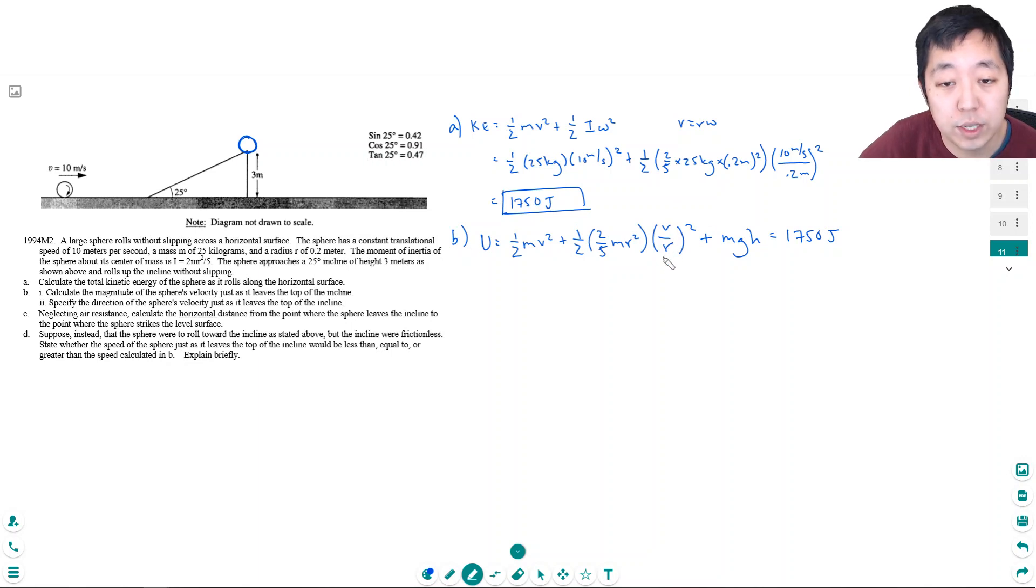Now this r squared is going to cancel with this r squared. So this is one half mv squared plus one fifth mv squared. What's one half plus one fifth? That's seven tenths. So if I combine these two, I get seven tenths mv squared plus mgh is equal to 1750. And so I can solve for v squared. I can subtract mgh. So v squared would equal 1750 minus mgh. And then I'm going to divide by seven tenths m, right? And then I take the square root of this.